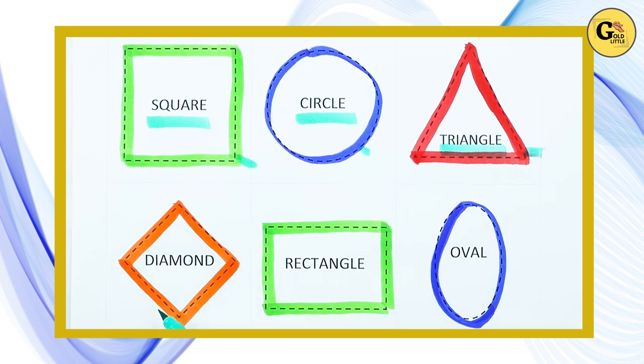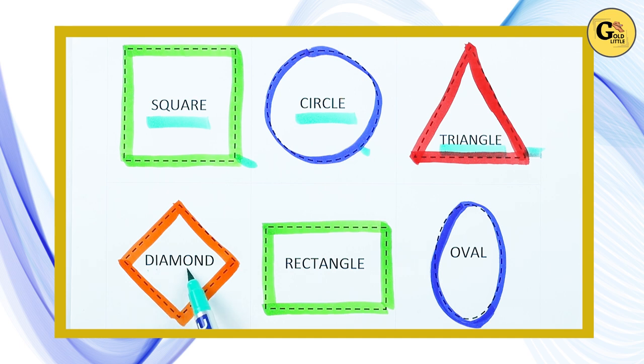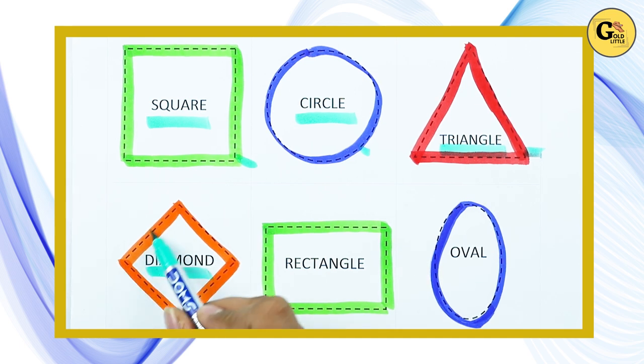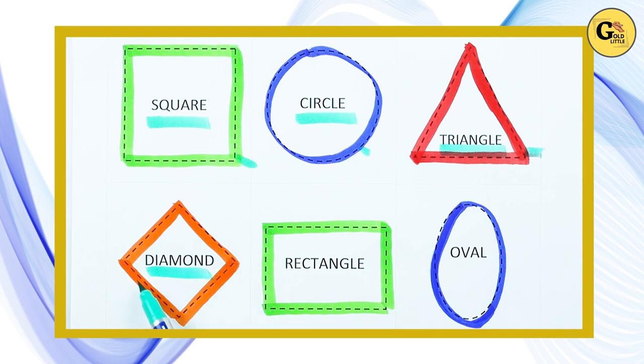Which shape is this? Diamond. D-I-A-M-O-N-D. It's a diamond with orange color.